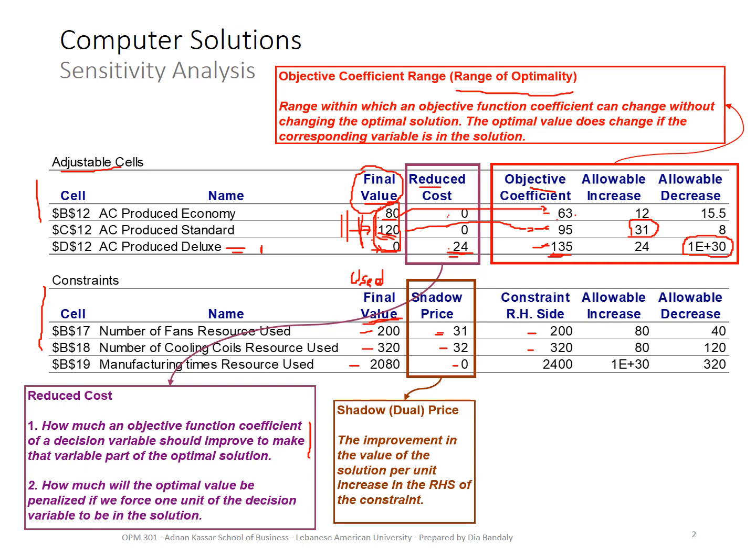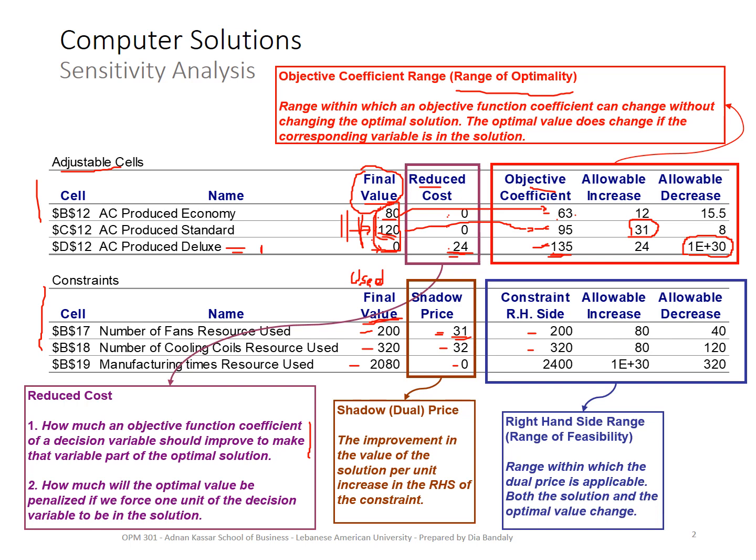What is the shadow price? It is the improvement in the objective function or the optimal value that happens with one unit increase in the right-hand side of that constraint. So in other words, let's take the fans. If I had one more fan, my optimal value, my optimal profit would have increased by $31. If I had 10 more fans, it would have increased by $310. But what's the limit for that applicability for the shadow price? Here we go. This is the limit.